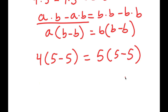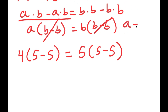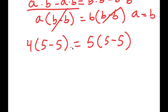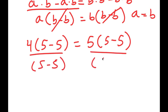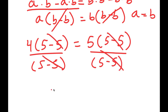So now I have 4 times 5 minus 5 is equal to 5 times 5 minus 5. If I have a times b minus b equals b times b minus b, I can divide both sides by b minus b, and these cancel out, leaving 4 is equal to 5.